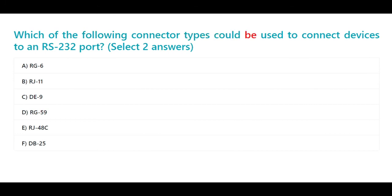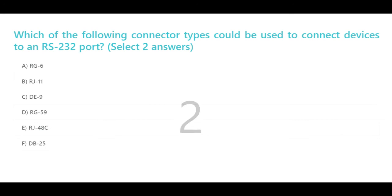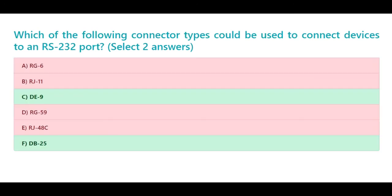Which of the following connector types could be used to connect devices to an RS-232 port? Select two answers. A. RG6. B. RJ11. C. D9. D. RG59. E. RJ48C. F. DB25. The correct answers are C. D9 and F. DB25.